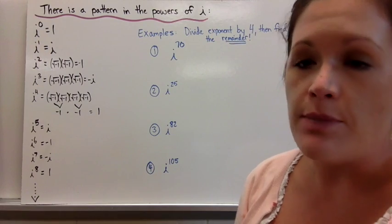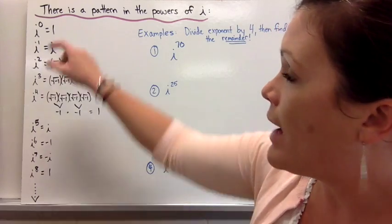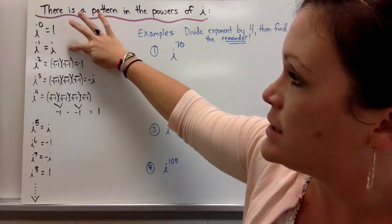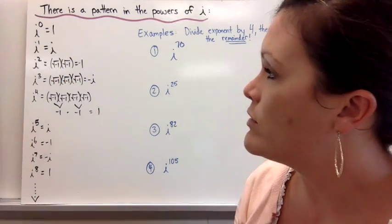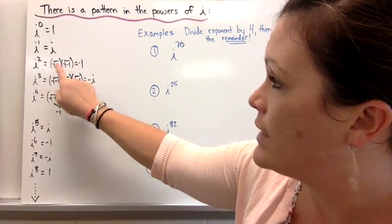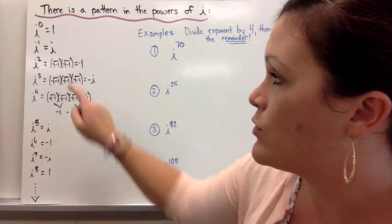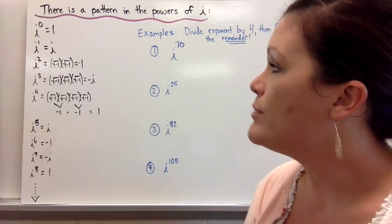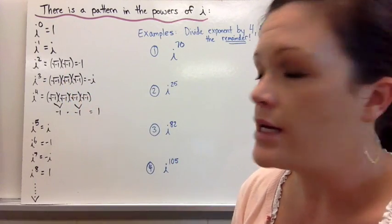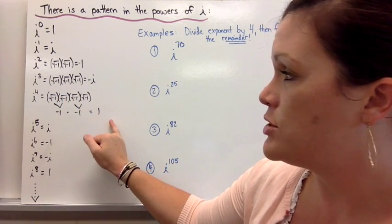I want to show you the pattern that the powers of i follow. Starting with i to the zero power — anything to the zero power is just equal to 1, so i to the zero also equals 1. i to the first power is just equal to itself. i squared is equal to the square root of negative 1 times the square root of negative 1, which comes out as negative 1 because the square roots cancel. i cubed equals three square roots of negative 1 multiplied together, which equals negative i. i to the fourth power would be four of these multiplied together, and they all clean up to equal 1.